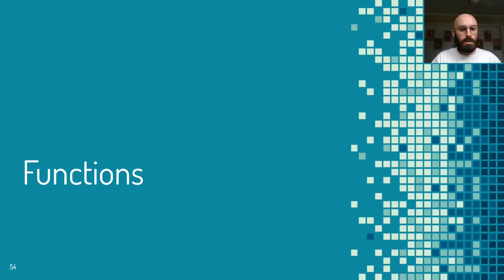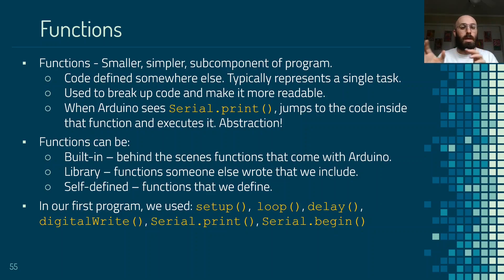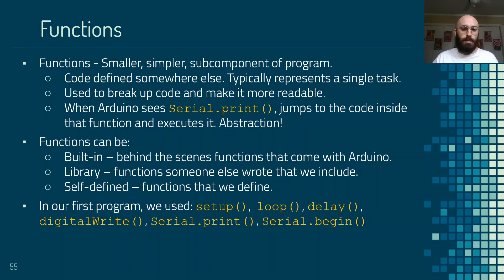There's information in the notes about the serial port functions and the delay function with links to examples. More generally, a function is a smaller, simpler sub-component of a program — code defined somewhere else that typically represents a single task, used to break up code and make it more readable. When the program sees Serial.println it jumps to where that function is defined behind the scenes by Arduino and executes it — that's abstraction. We don't have to worry about the nitty-gritty details.